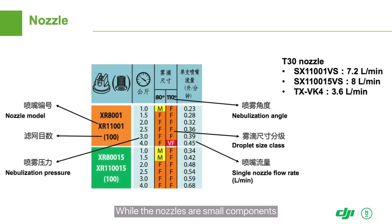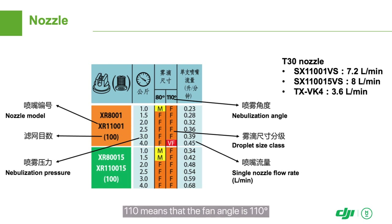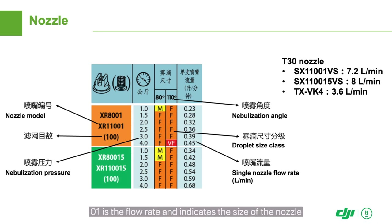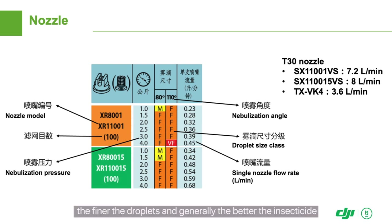While the nozzles are small components, they have a major impact on spraying performance. The T-Series drones use SX-110-01VS nozzles by default, where SX means the nozzle is a fan shape, 110 means the fan angle is 110 degrees, 01 is the flow rate and indicates the size of the nozzle, and VS means the nozzle is made of stainless steel. Note that the smaller the nozzle, the finer the droplets, and generally the better the insecticide or fungicide spraying performance. However, the droplets are then more prone to drift and evaporation.